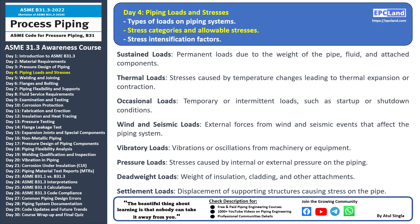Now, let's talk about allowable stresses. Allowable stresses are the maximum permissible stress levels that materials can endure without risking structural integrity. These values depend on various factors including the material type, temperature, and operating conditions. Engineers must ensure that the stresses in the piping system remain below these allowable limits to maintain safety and reliability. Understanding stress categories and allowable stresses is crucial for designing a piping system that can handle different load conditions while ensuring its longevity.